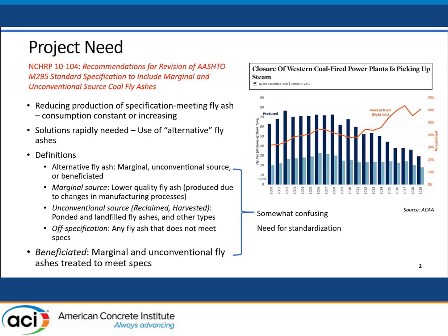An unconventional source fly ash — we heard today why these are called harvested ashes if they're coming from ponds or landfills for legal purposes, although I still hear the word 'reclaimed' very often. There maybe should be more standardization of the naming. These unconventional sources can also include bottom ashes or CFB ashes. Importantly, unconventional and marginal source ashes can be on-spec or off-spec. Lastly, beneficiated refers to where we're taking one of these sources and treating it to meet the specification.